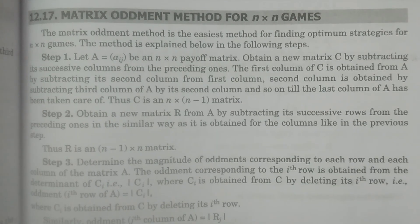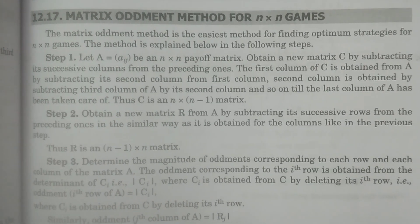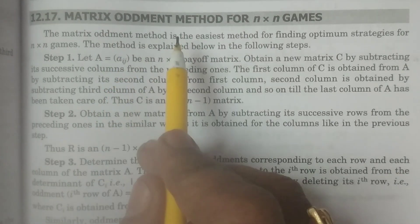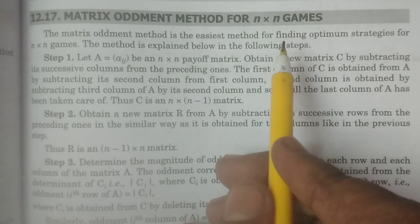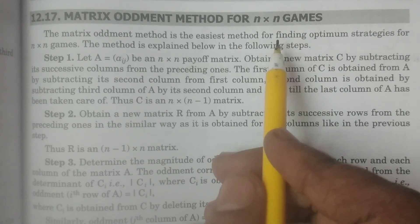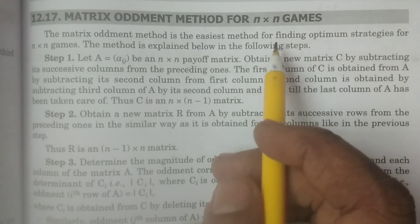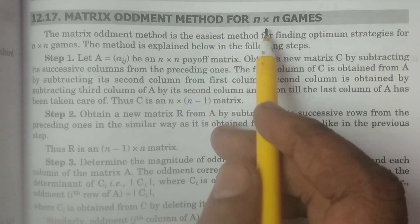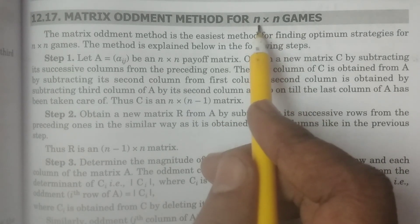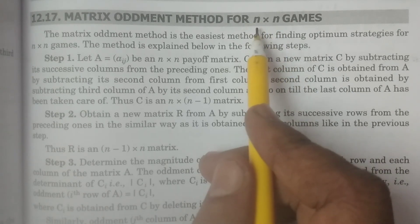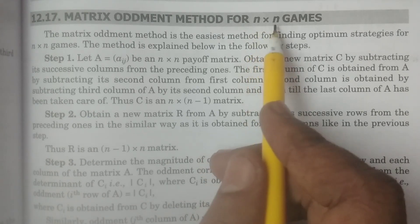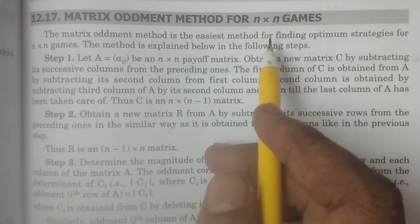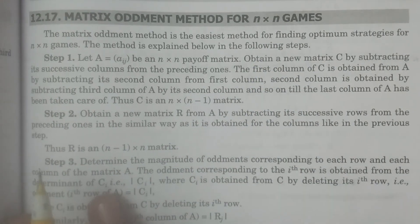Welcome to BSc Statistics students. In this class, I explain the matrix oddment method for n by n games. This is one method to solve problems in game theory. An important thing about this particular method is it can be solved only for a square matrix n by n, which means player A and player B have the same number of strategies — it may be 2, 3, or 4.